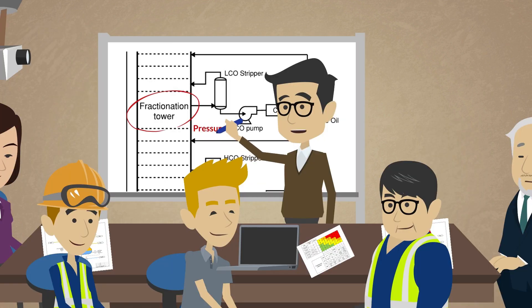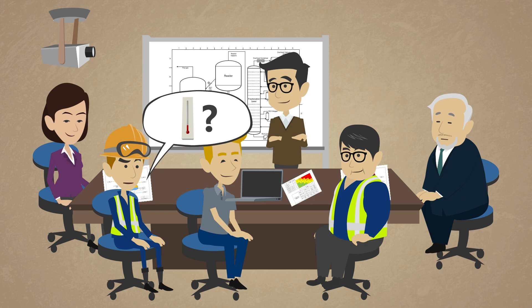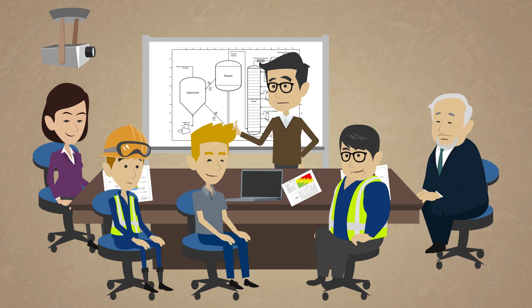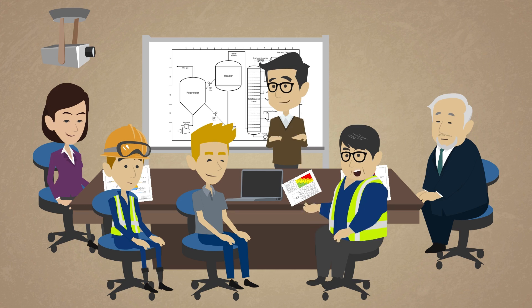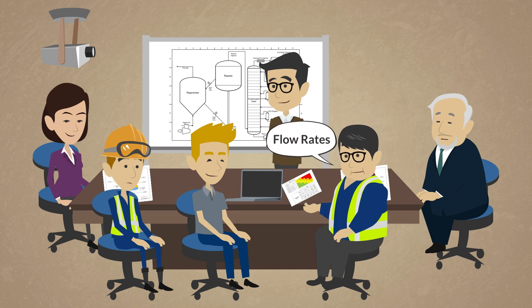We will also want to know the overhead operating pressure of the fractionator tower. We will need to know the temperature of the streams exiting the fractionator tower as well as the temperature of streams leaving any of the coolers or heat exchangers in the system. It will also be good to know the flow rates of the product and the recycle streams on the tower, as they're important for both the level and temperature control of the tower.